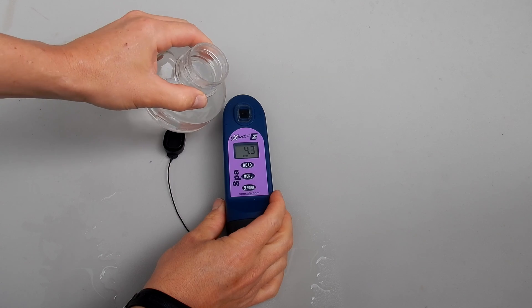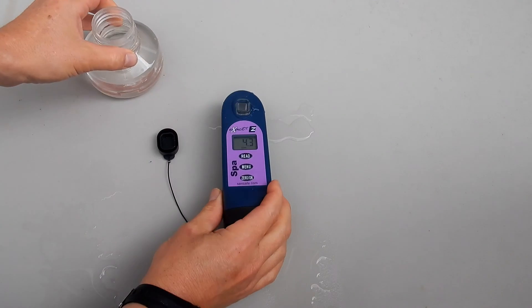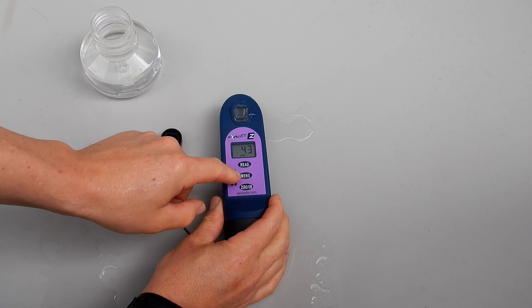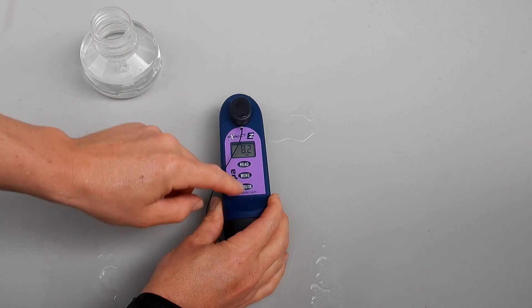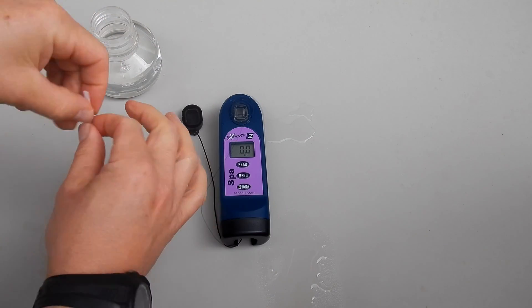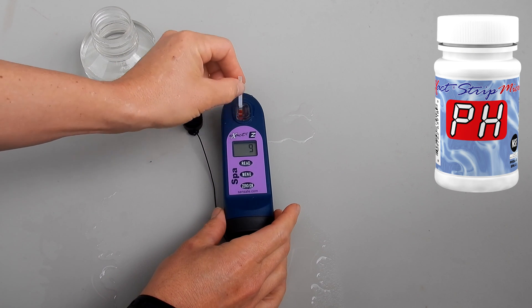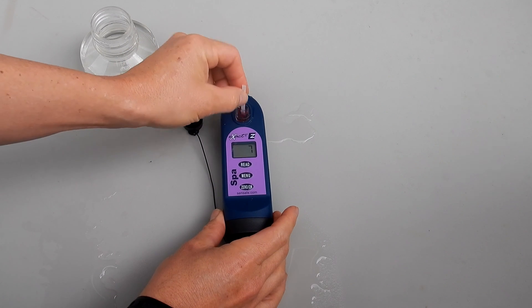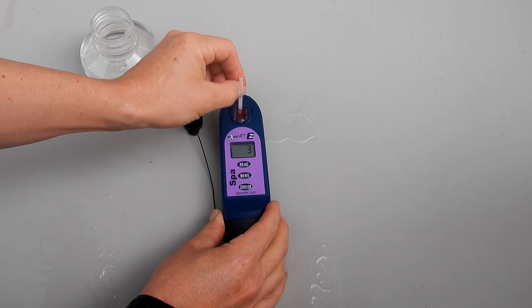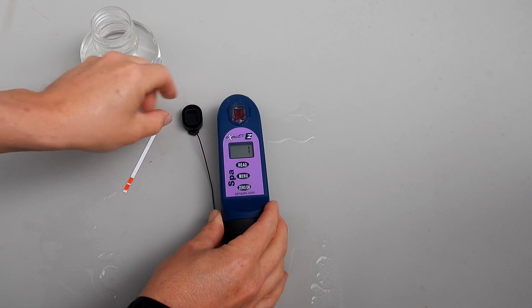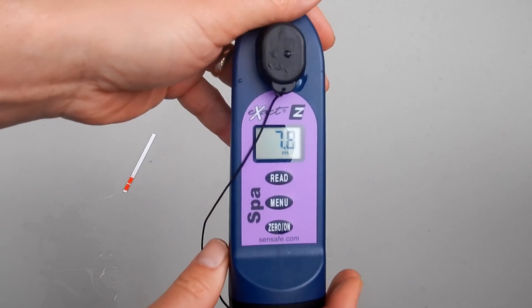Let me fill the chamber up again. I'll do the pH test. You want to zero the unit out every time you do a test. Again hit the read button. Then you want to move the strip back and forth inside the chamber. You want to move it back and forth about two times every second. The pH here is coming in at 7.8.